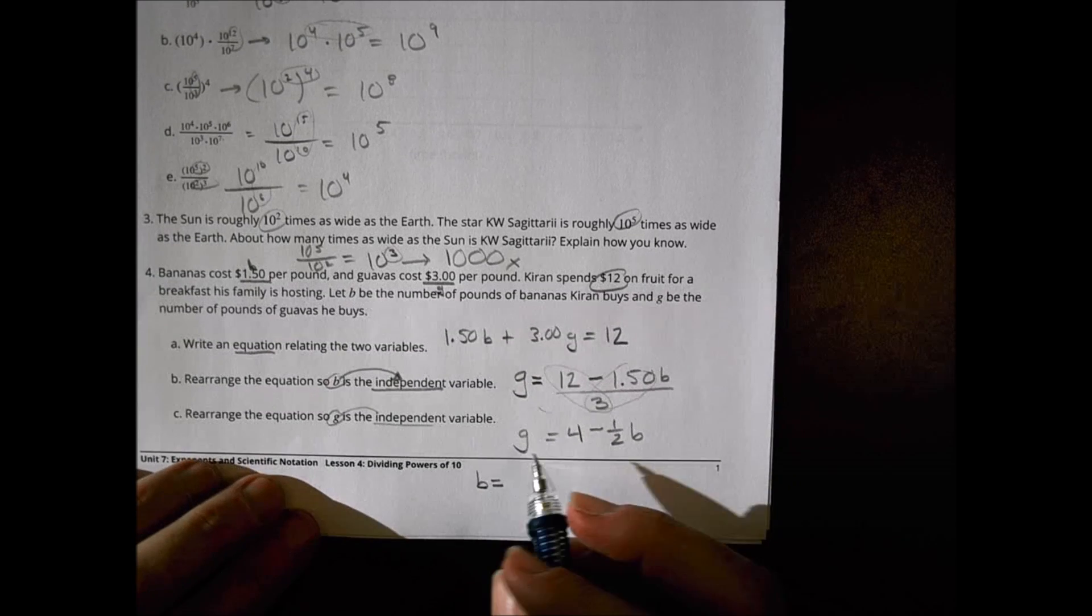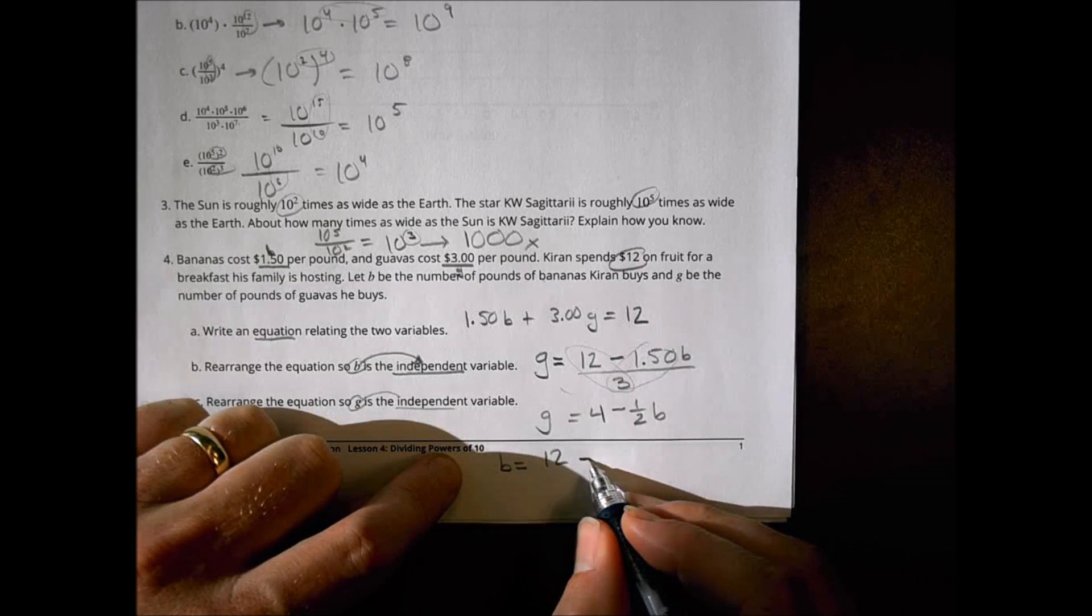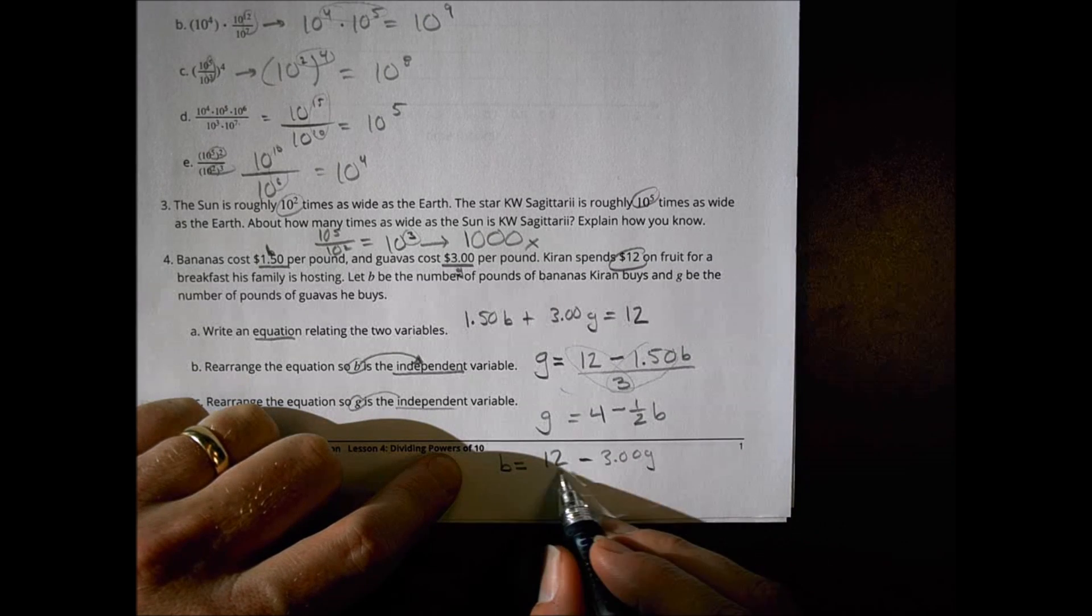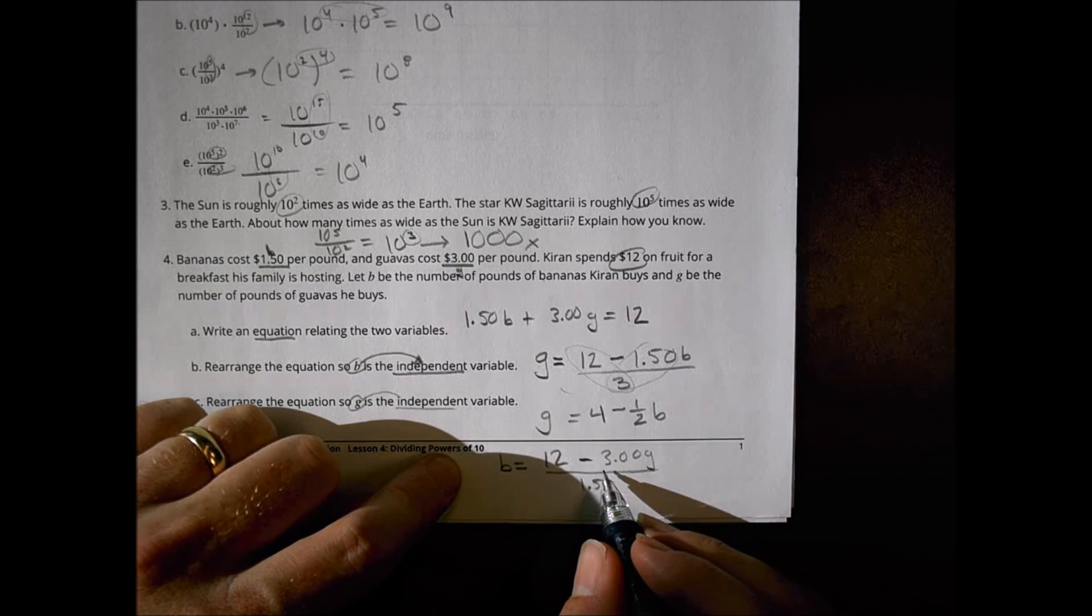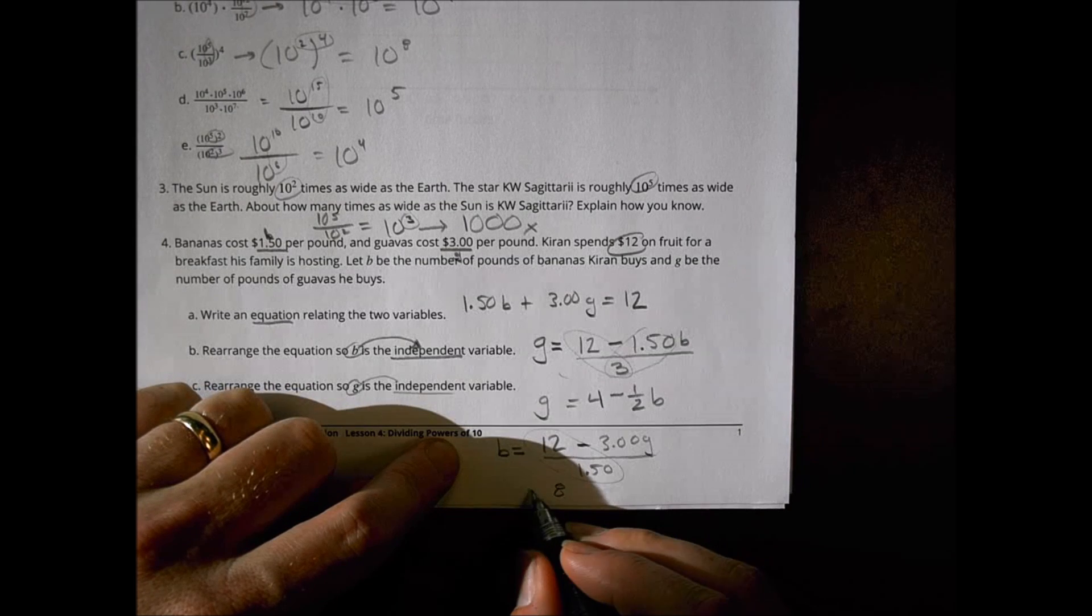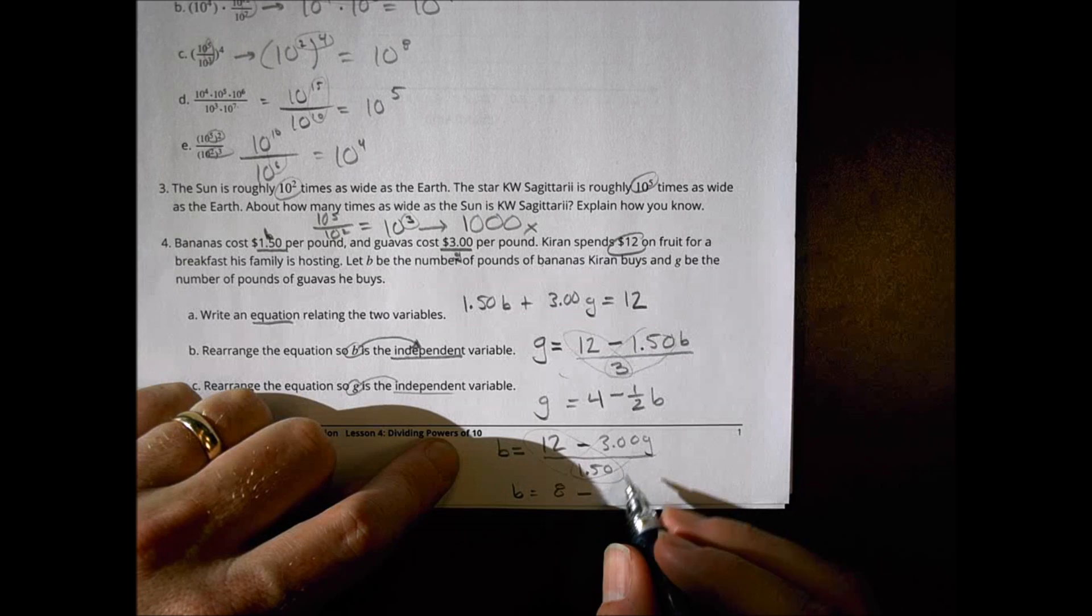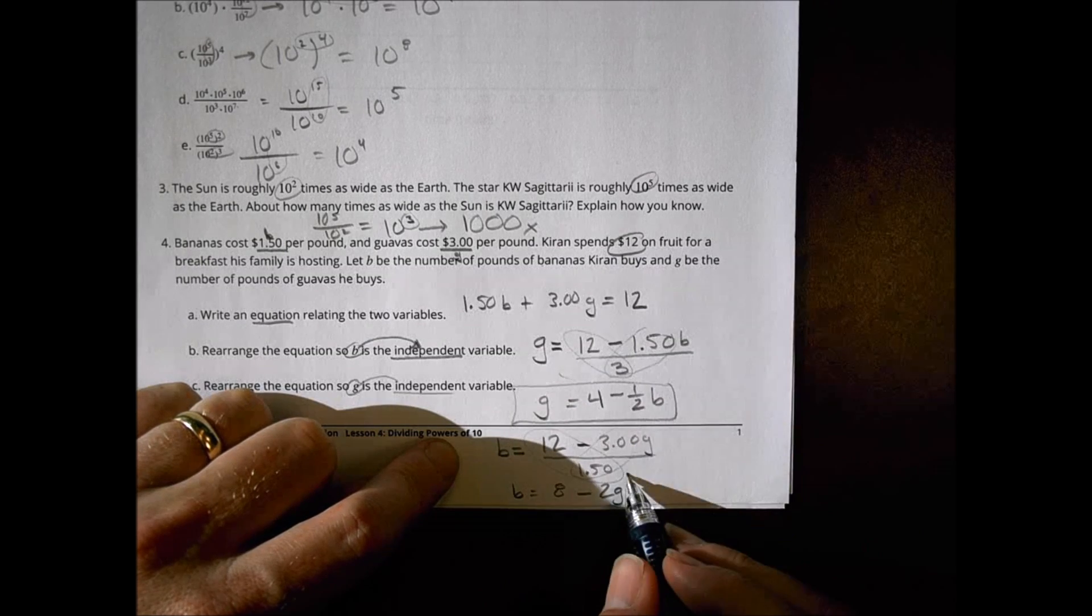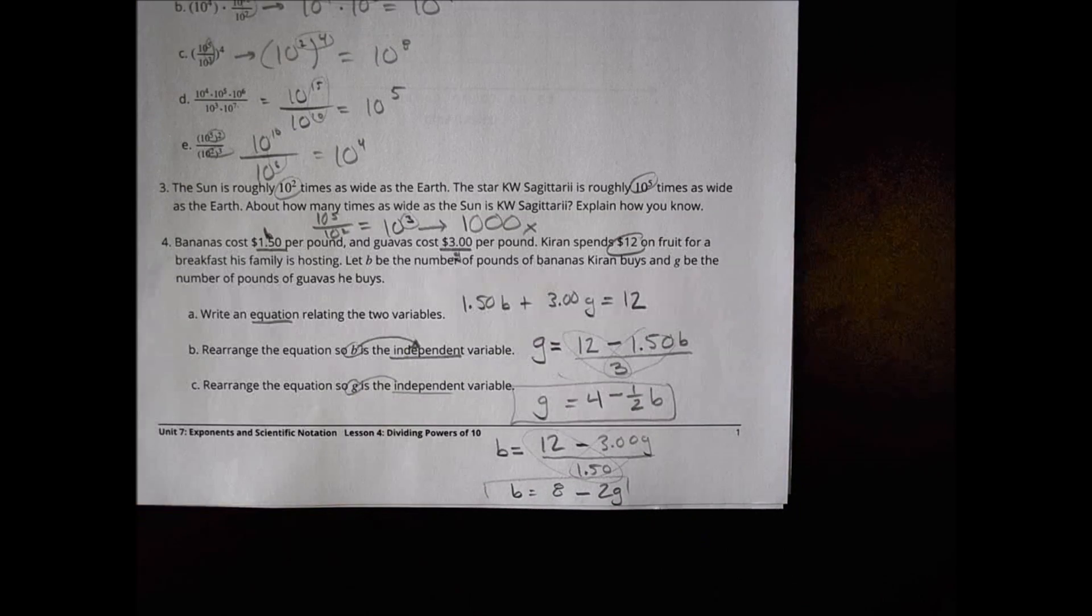We'll do the same thing with the B for the bananas, right? I'm going to have the twelve still. And now I'm going to subtract the three point zero zero guava. And divide everything by the one point five that were with the banana. So twelve divided by one point five zero is actually about eight. So bananas equals eight minus. And then three divided by one point five is two and a G. So my two simple equations are going to be something along these lines there. Those will work out. But if you have a larger equation, that is just fine.